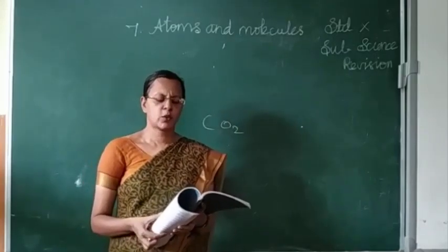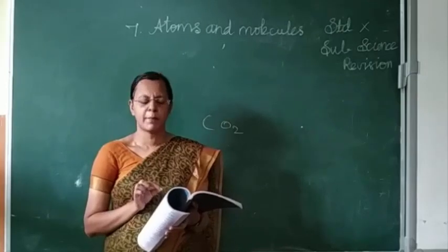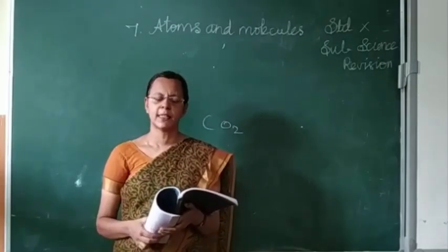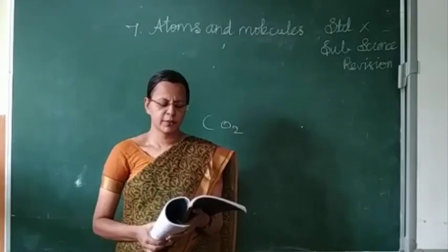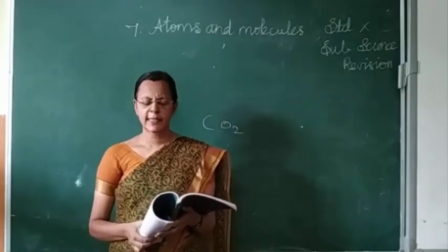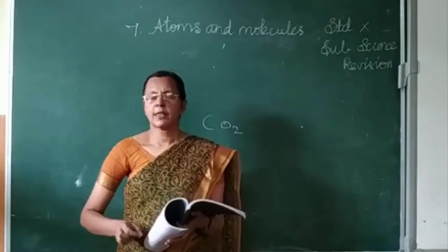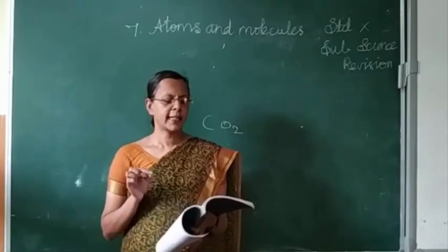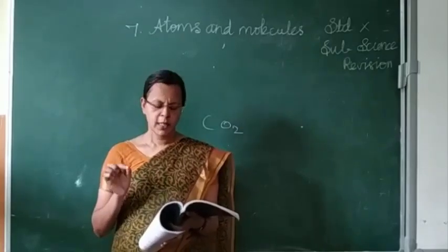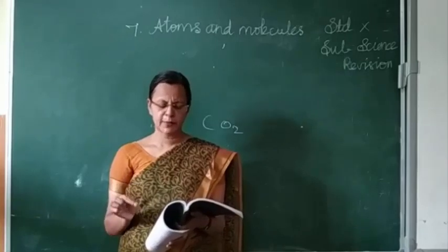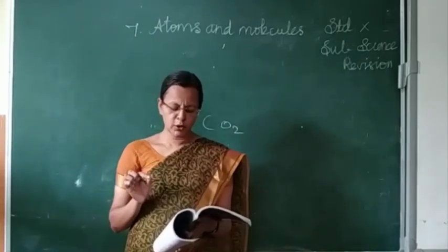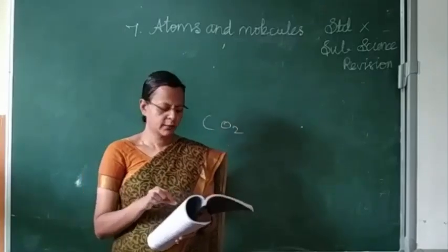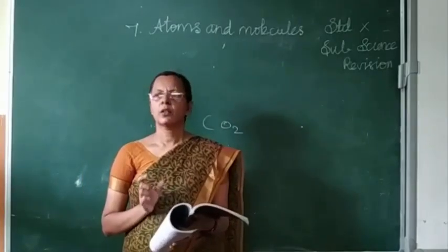Which of the following statement is incorrect — one mole of hydrogen gas contains Avogadro's number of atoms. The volume occupied by one mole of any gas at STP is 22.4 litres. In the nucleus of 20-Ca-40, there are 20 protons and 20 neutrons. Gram molecular mass of oxygen molecules — 32 gram. One mole of any substance contains 6.023 × 10²³ molecules. These are the textbook evaluation choose-the-correct-answer questions.